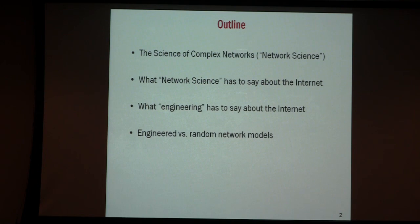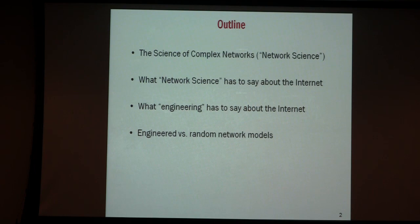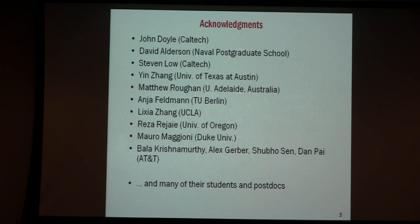The outline is brief. We have 10 minutes on each one of these topics: what do we mean by complex, what does network science say about internet, what does our engineer say about internet, and then finish up with one key message — when we talk about networks like the internet which we designed, how relevant are random network models? This work has been done over the last 10 years with many people; it has been a collaborative effort.